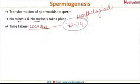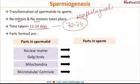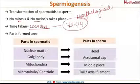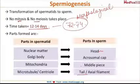The parts of the spermatid give rise to specific parts of the sperm. The nuclear material in the spermatid leads to formation of the head. The Golgi bodies form the acrosomal cap. The mitochondria form the middle piece, and the tail or axial filament is formed by the microtubule or the centriole.